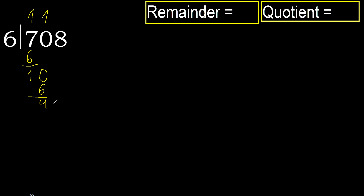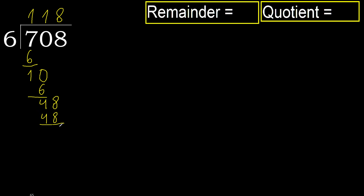Next. Bring down: 48. 6 multiplied by 9 is greater. Multiply by 8 gives 48, which is not greater. Okay, subtract.